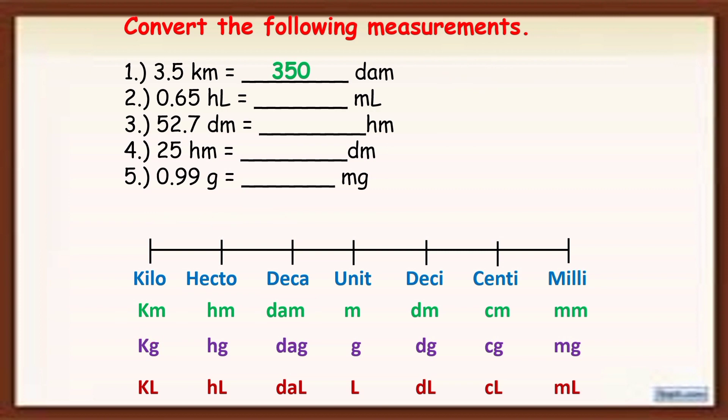Example number 2. 0.65 HL or hectoliter to ML or milliliter. Again, bilangin muna natin kung ilang unit from HL to ML. So 1, 2, 3, 4, 5. There are 5 units. Now, use the 0.65. So from the decimal point, we are going to count 5 places to the right. Same lang sa kung ilang unit at kung saan papunta ang ginawa natin sa metric converter.